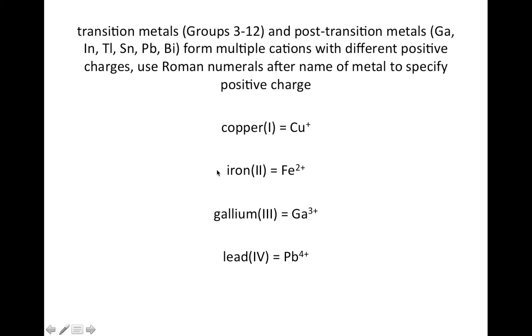Now, there's metals in the middle of the periodic table, groups 3 to 12, called transition metals, and some metals in the lower right of the table, below the non-metals on that side, that are called post-transition metals. Those metals can have multiple charges, depending on the situation, so you're going to use Roman numerals to indicate the charge that those metals have in that particular situation.